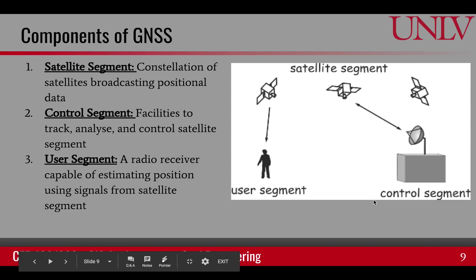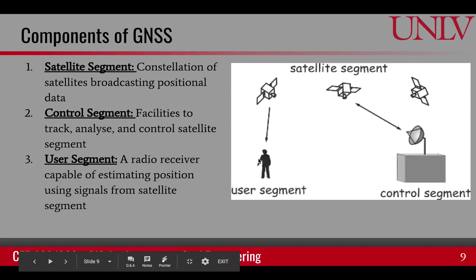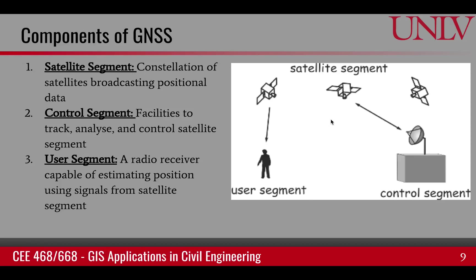There are three main components of any GNSS. The first is the satellite component — the constellation of satellites continuously broadcasting positional data. Then we have the control segment, which consists of ground facilities that track and communicate with the satellites, analyze their positions, and ensure they stay in order and accurate. The last component is the user component — the radio receiver that gets the signal from the satellite and estimates the position for a user.